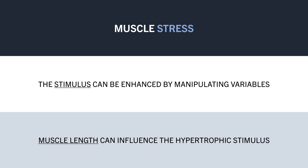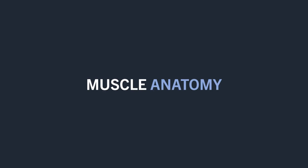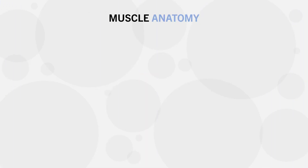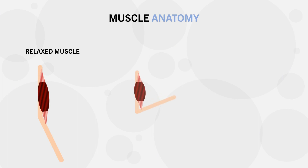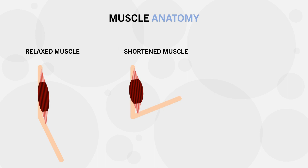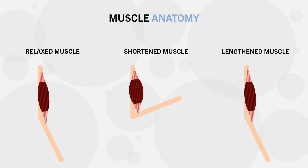To understand how muscle length influences hypertrophy, we first need to look at the basic anatomy of a muscle. Each muscle is basically made up of a bunch of contractile tissue which shortens and lengthens to produce force. As the fibers contract, the muscle shortens, pulling each attachment site closer together and moving a specific joint. As the fibers relax or contract eccentrically, the muscle lengthens back to its relaxed state due to gravitational force.